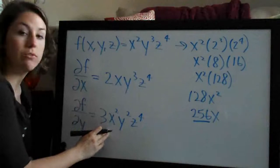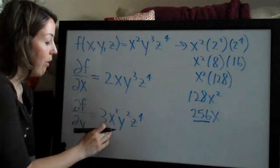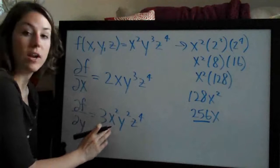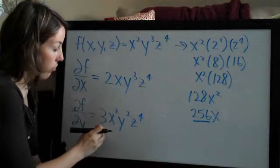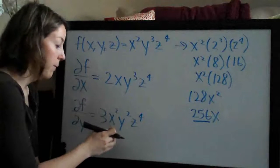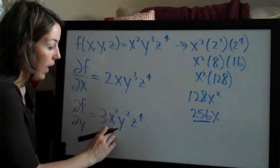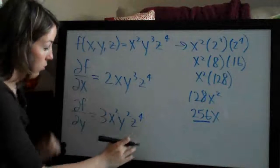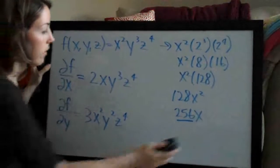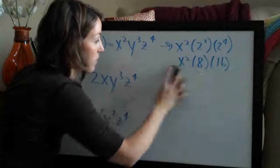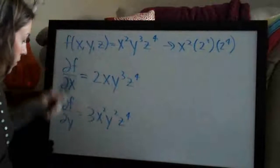When you take the partial derivative, you always like to keep the variables in alphabetical order. So I could have written three y squared, x squared, z to the fourth, but we like to always keep them x, y, z in order. So we'll go ahead and do the same thing for z.